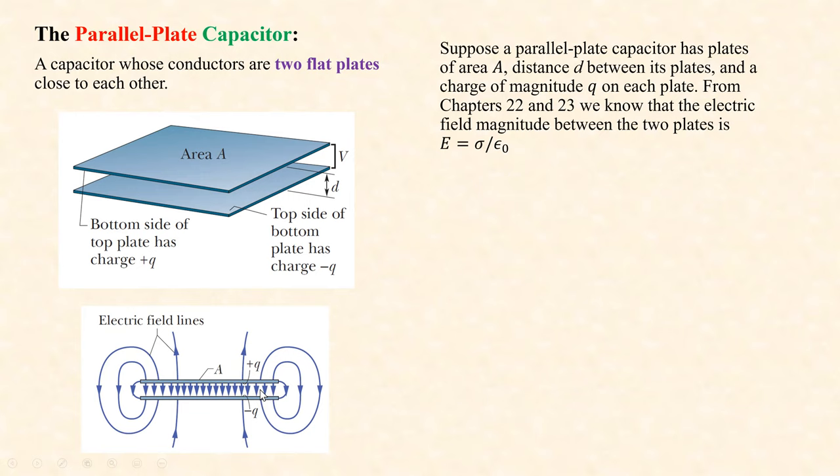When the switch is closed, charges accumulate on the capacitor plates — one side becomes positive, the other negative — giving charges +Q and −Q. The formula Q = CV applies: the charge on the capacitor equals the capacitance times the voltage applied across its plates.